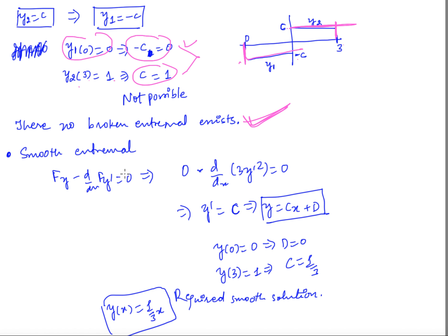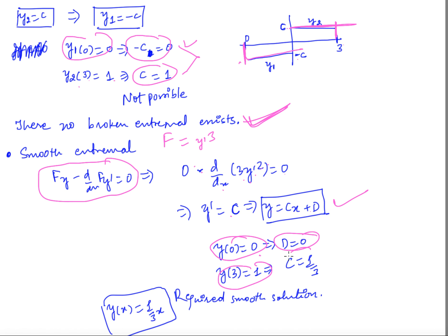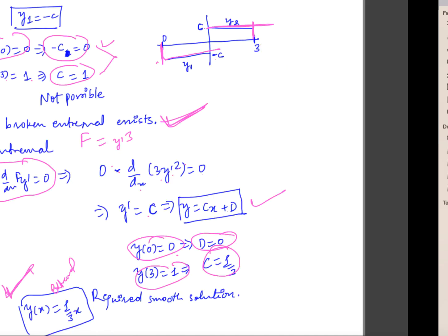A smooth extremal does exist. Solving the Euler equation with f = y'^3 gives d/dx(3y'^2) = 0, so y' = constant, meaning y = cx + d. Applying y(0) = 0 gives d = 0, and y(3) = 1 gives c = 1/3. So the smooth extremal is y(x) = x/3.